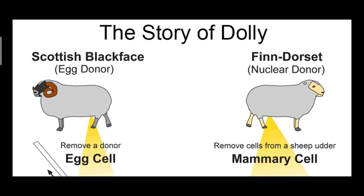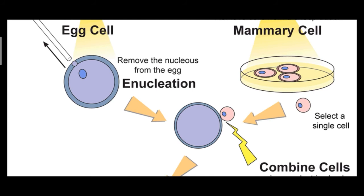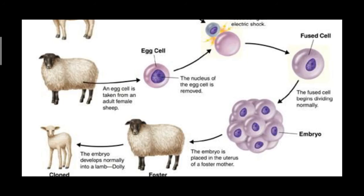The sheep is of the Finn Dorset variety. A cell from the mammary gland of that sheep was collected. Simultaneously, an egg was obtained from a Scottish Blackface ewe. From the second parent, the egg cell was taken. The nucleus was then removed from the egg. The nucleus of the mammary gland cell from the Finn Dorset sheep was inserted into the enucleated egg of the Scottish Blackface ewe.